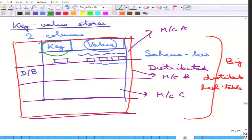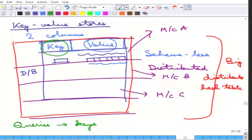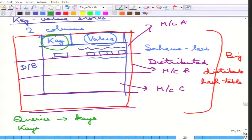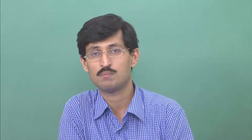All queries are on the keys only. One cannot query the value itself — just like in hashing one cannot say give me the key for which the value is this. That is one disadvantage. The keys must be indexed because otherwise one would have to search all keys with no gain. The memory of the machines where queries land can also be used as a cache for repeated key lookups.